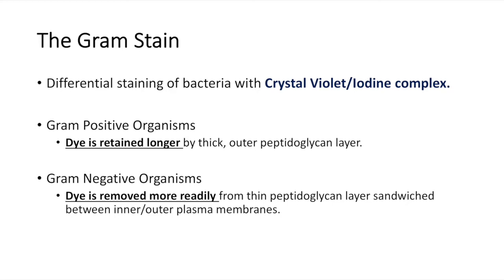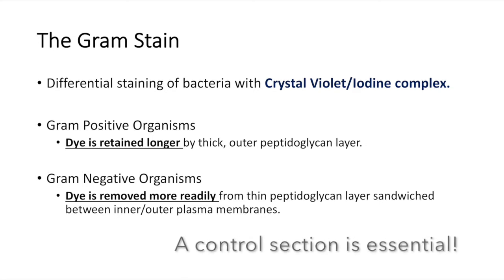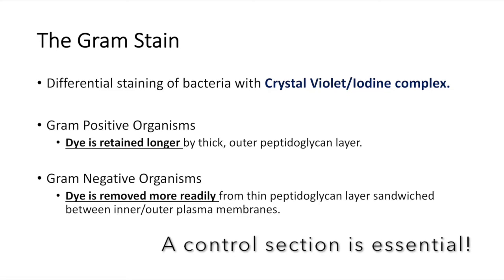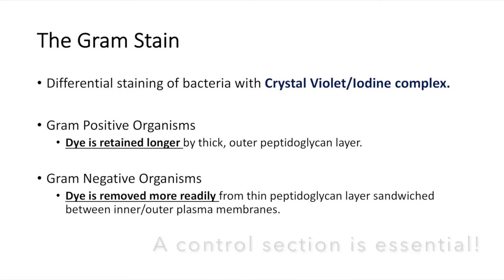Gram stains are a relatively crude but quite useful technique for identifying and classifying microorganisms into one of two groups, based upon their retention of crystal violet and iodine complex. Nevertheless, the nature of this technique requires special attention to the use of control sections.